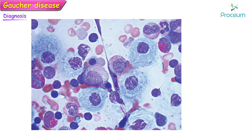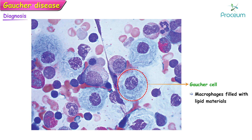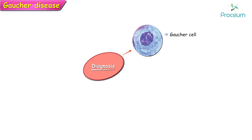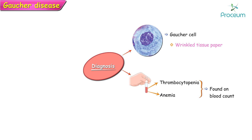The diagnosis of Gaucher's disease involves visualizing macrophages filled with lipid material, known as Gaucher cells, which are a cardinal feature of this disease. Gaucher cells have a characteristic histologic appearance resembling wrinkled tissue paper. Anemia and thrombocytopenia are typically found on blood counts.